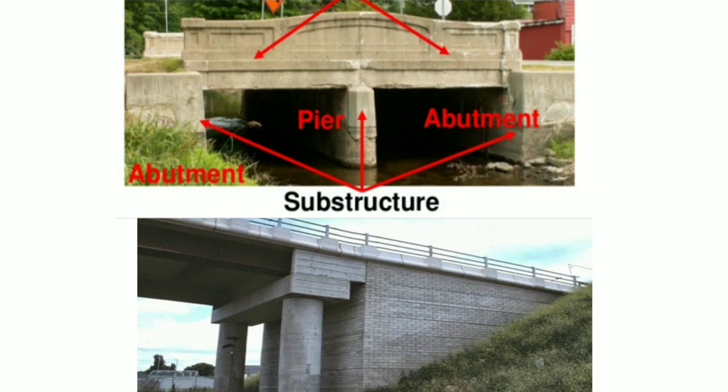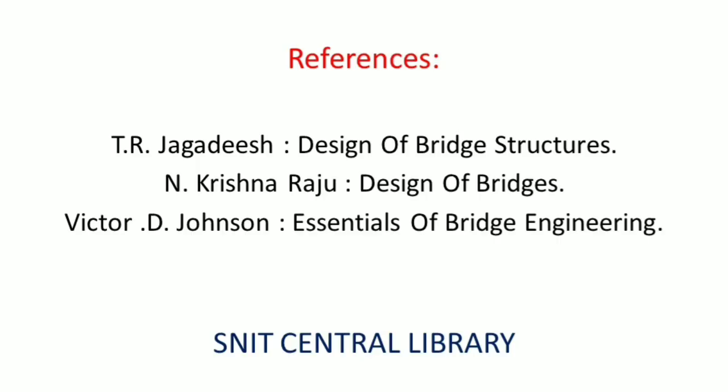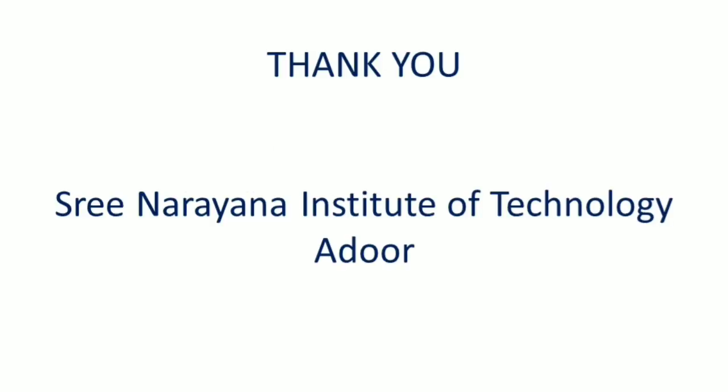A second difference: abutments are two in number, whereas piers can be one, two, or more than two. For more references, visit SNIT Central Library. Thank you.